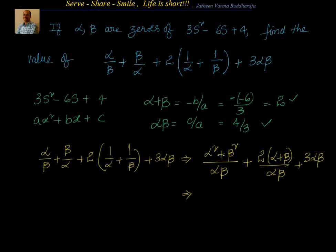Now, before going there, we'll find what α² + β² is. For that, I'll do a small calculation here. α² + β² = (α + β)² - 2αβ. Since α + β = 2, that is 2² = 4 minus 2 into αβ, which is 2 × 4/3 = 8/3. If you simplify that, you get 4/3.